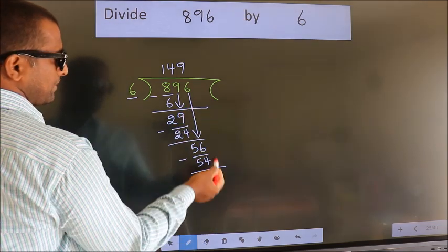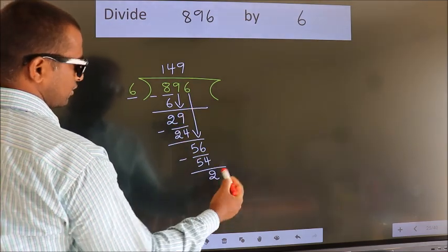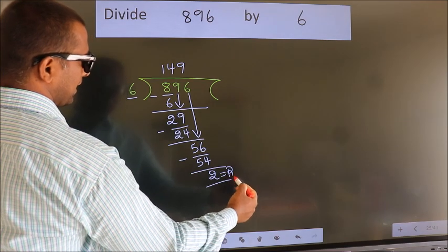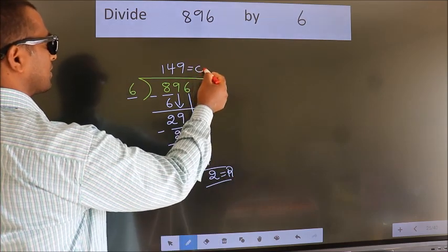No more numbers to bring down. So we stop here. This is our remainder. This is our quotient.